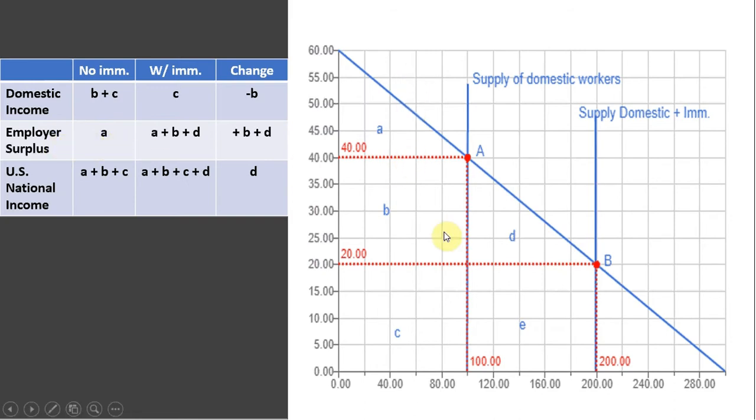Employer surplus without immigration is going to be the difference between the height of the labor demand curve and the wage. Remember, the height of the labor demand curve represents the marginal revenue product or the value of the marginal product of workers. This is how much additional revenue a firm will get by hiring one more worker. And so the employer surplus or income, in this case, generated from hiring workers is just this difference between the height of the demand curve and the wage up to the last worker hired. So that's area A.